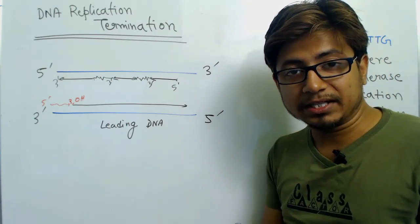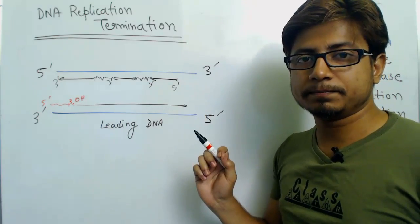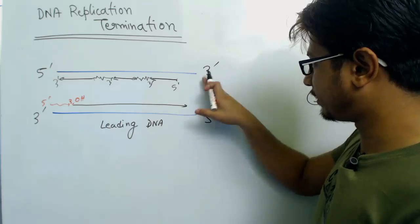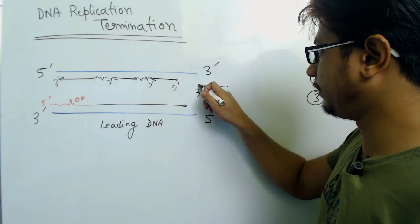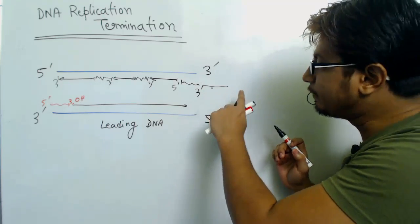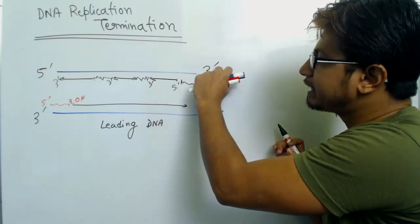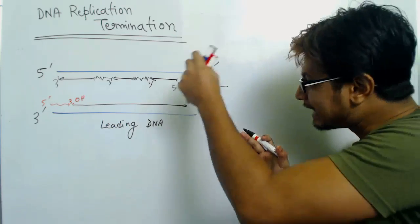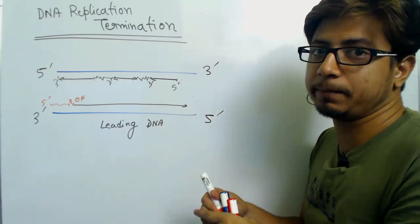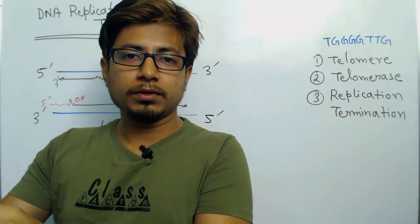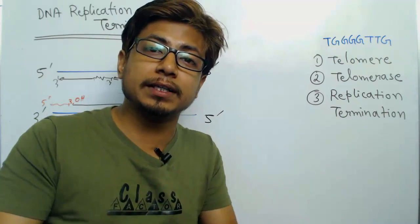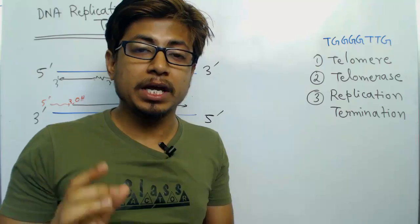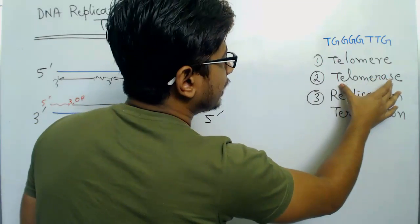We know DNA polymerase cannot extend from a 5' end — it can only extend from a 3' hydroxyl group. So this creates a problem: to stretch that end, we would need to provide a 3' hydroxyl, and to provide a 3' hydroxyl we need a template. But there is no template left because this is the very end. That is known as the end replication problem in eukaryotic DNA replication — at the end there is no room for providing any template, and without a template no primer can be added, and without a primer no elongation can be made.